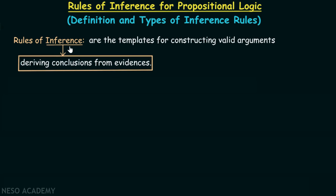Now, what are rules of inference? Rules of inference are the templates for constructing valid arguments. They are the templates for constructing valid arguments. Basically, rules of inference themselves are the valid arguments, and they are used to construct more complicated valid arguments.